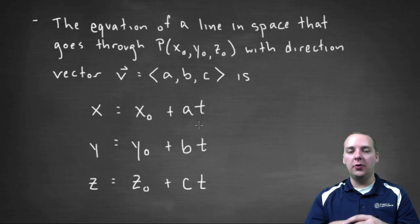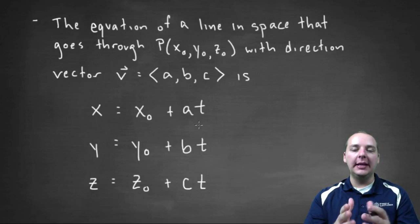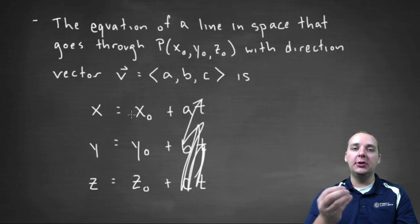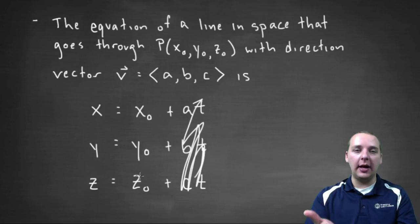where t ranges over all numbers. Just to start with an easy point, if t was zero, then these terms here would be gone, and you would start at x-naught, y-naught, z-naught, which is a point on your line.